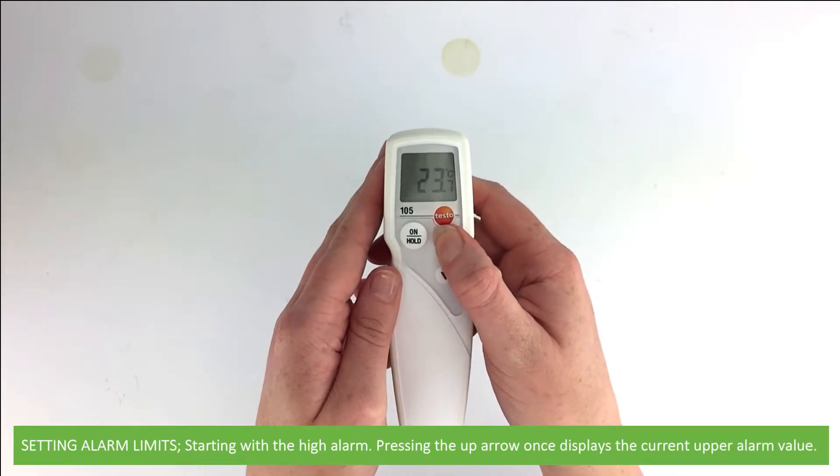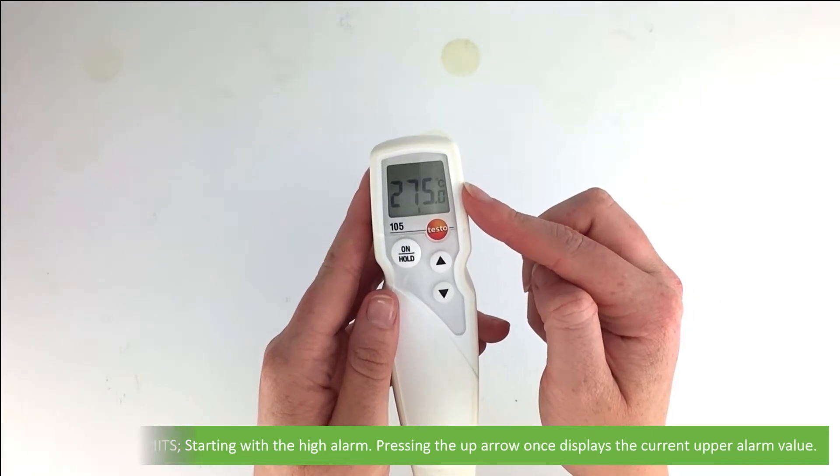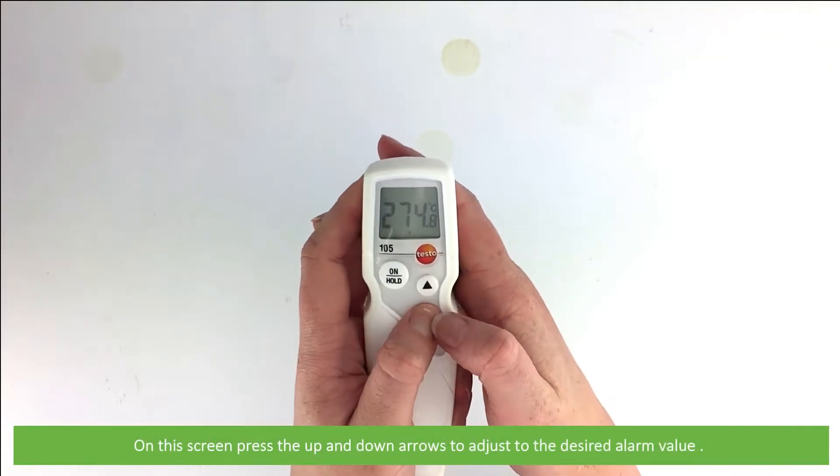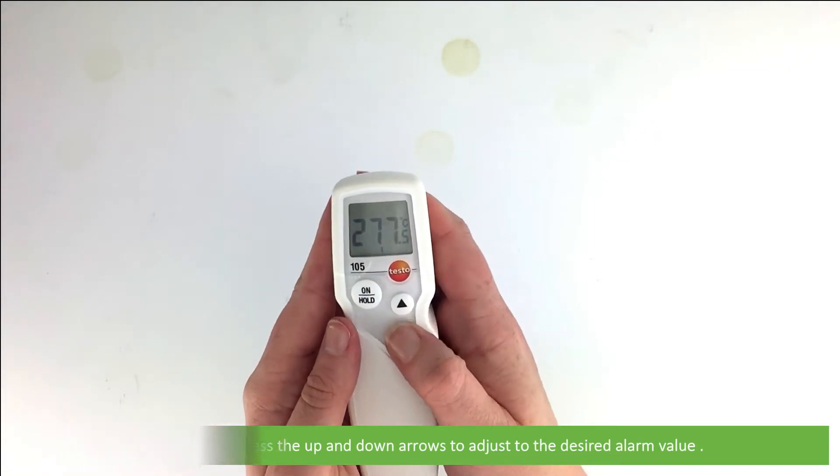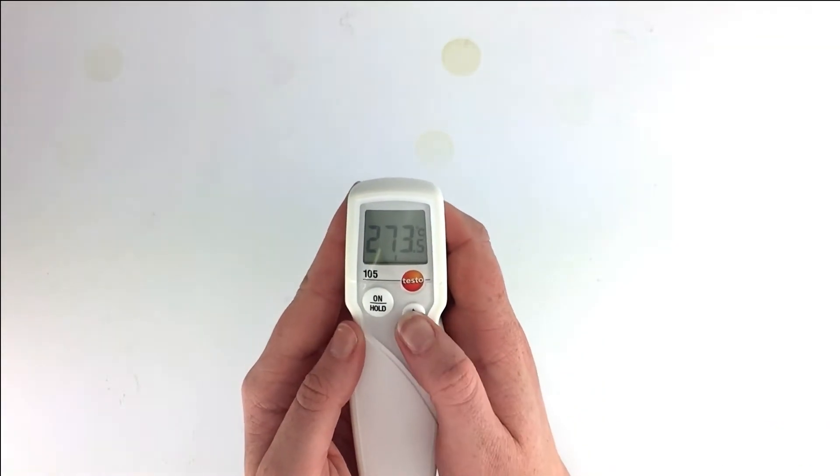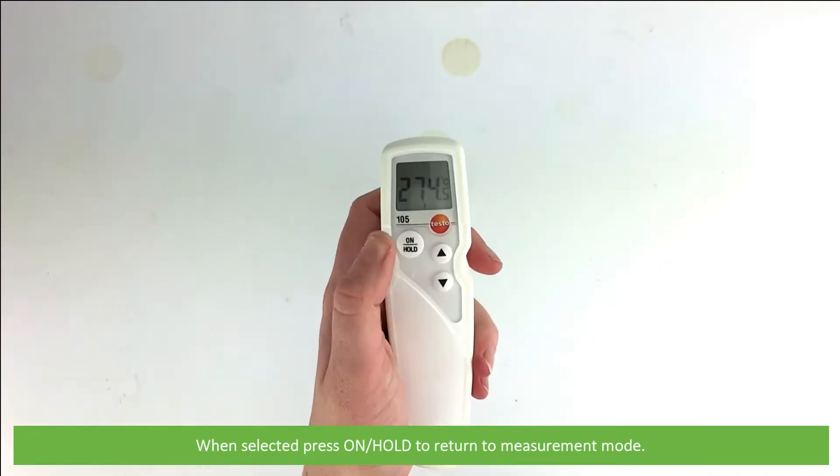Setting alarm limits: Starting with the high alarm, pressing the up arrow once displays the current upper alarm value. On this screen, press the up and down arrows to adjust to the desired alarm value. When selected, press the on hold button to return to measurement mode.